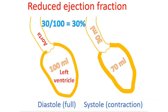This picture illustrates what reduced ejection fraction means. Ejection fraction is the fraction of blood pumped out from the left ventricle when it contracts after filling up. The period of relaxation is known as diastole, in which the ventricle fills, and contraction is known as systole. Normal ejection fraction is around 60 to 70 percent. When it is reduced below 40 percent, it is known as heart failure with reduced ejection fraction.